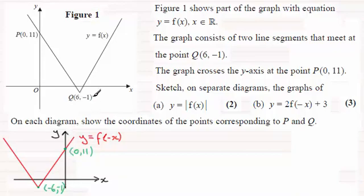But the point Q here at 6, minus 1 now moves to the other side and it's going to have coordinates minus 6, minus 1. So f of minus x then is a reflection of any graph y equals f of x in the y-axis.